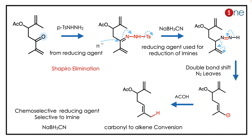You have the formation of nitrogen, which is a good leaving group, so nitrogen leaves and you have alkene formation with an anion. The anion has to be quenched — anion quenched by the acidic hydrogen — and you get the final product here.